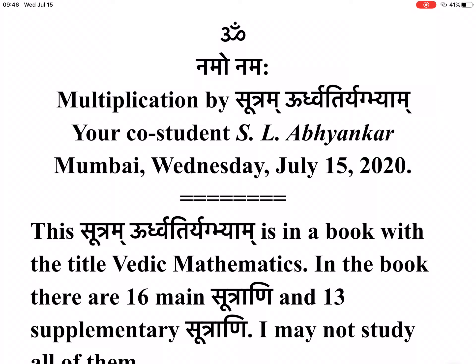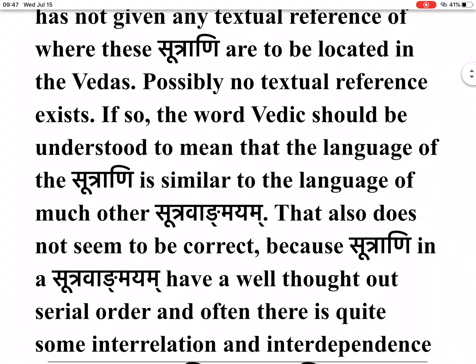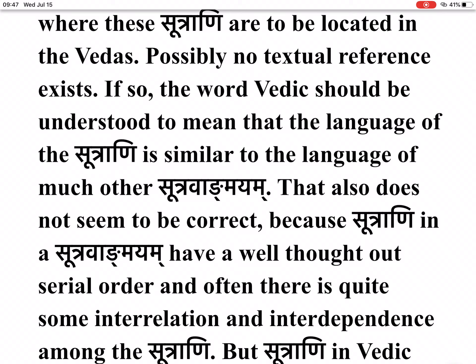This Sutram Urdhva Tiryak Bhyam is in a book with the title Vedic Mathematics. In the book there are 16 main Sutrani and 13 supplementary Sutrani. There is quite some controversy about the Sutrani because the author has not given any textual reference of where the Sutrani are to be located in the Vedas. Possibly no textual reference exists. If so, the word Vedic should be understood to mean that the language of the Sutrani is similar to the language of much other Sutra Vangmayam.